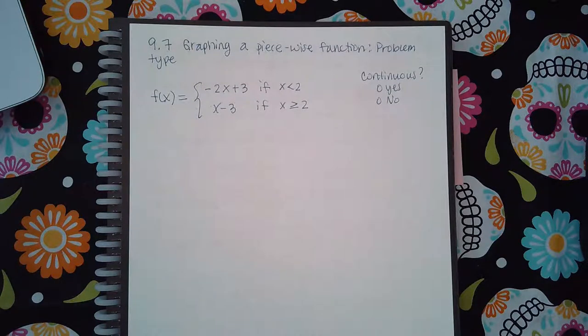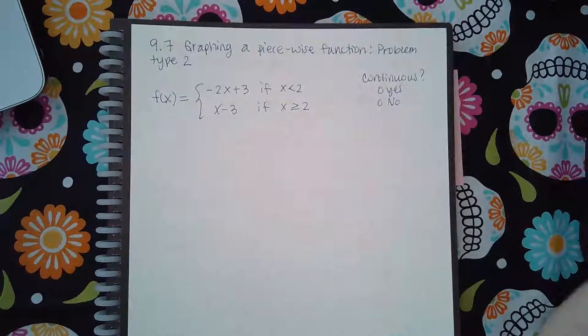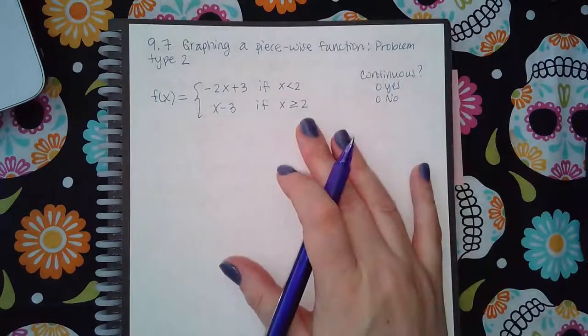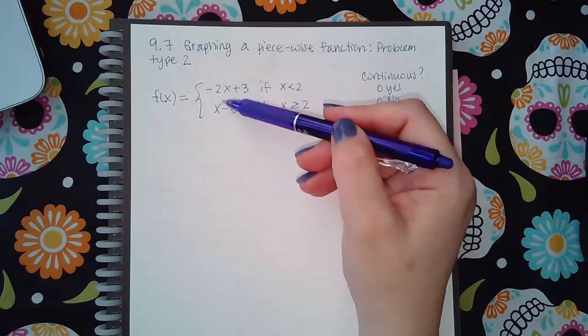Here we have graphing a piecewise function, problem type 2. We want to graph this function. There's only two pieces here, they are x to the first power, so they will look like lines. We need to create tables to draw these lines.